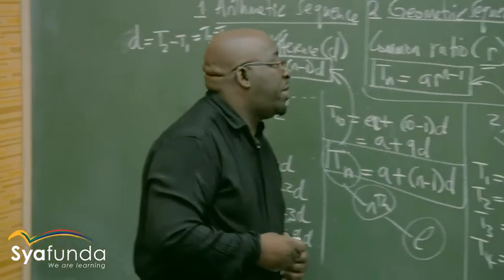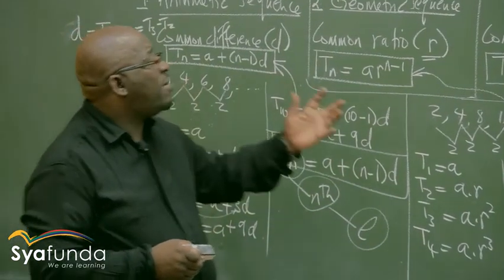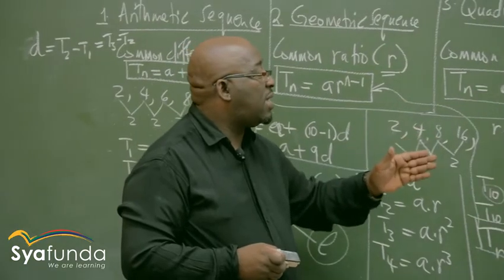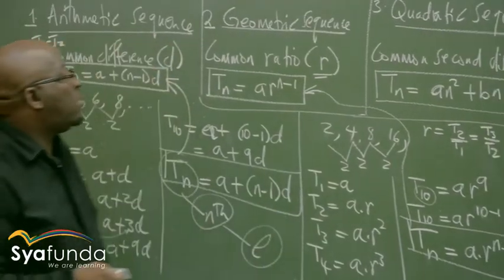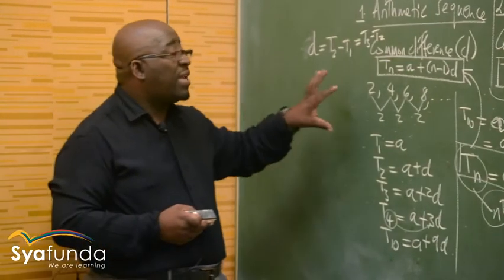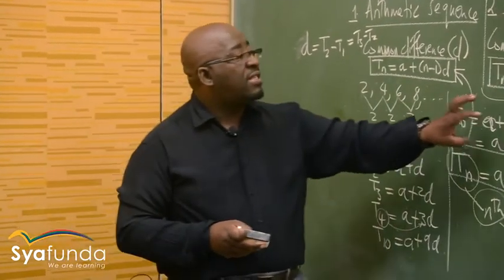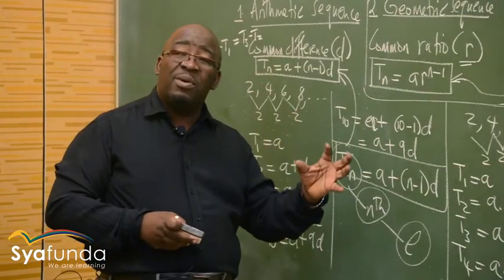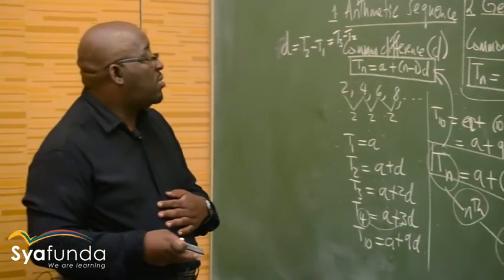There is a third type called the quadratic sequence. It comes from the quadratic equation AX² + BX + C, but instead of X we use N. That is how we identify it: the arithmetic sequence has a first common difference, the geometric sequence has a common ratio, and the quadratic sequence has a second common difference. I will show you how to work with quadratic sequences as we move on.